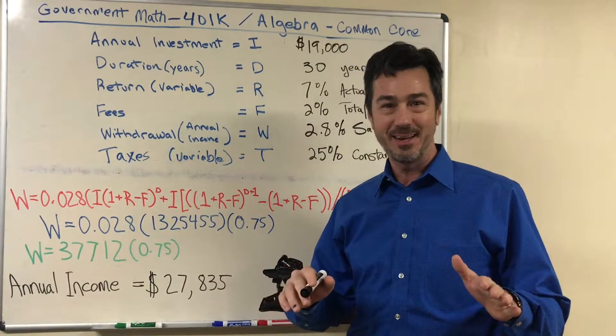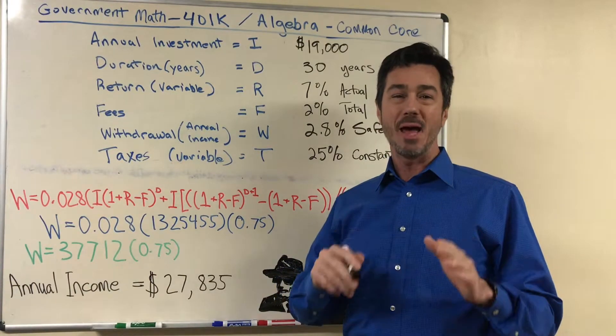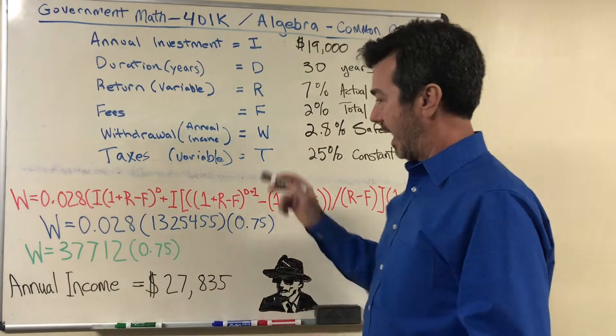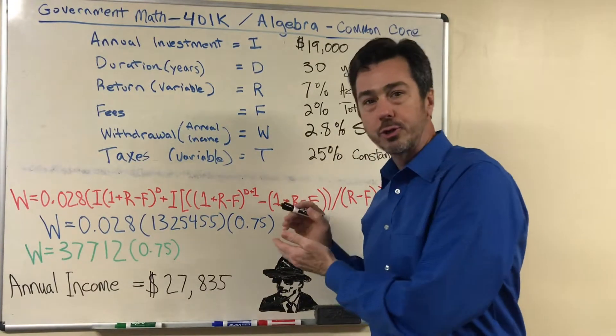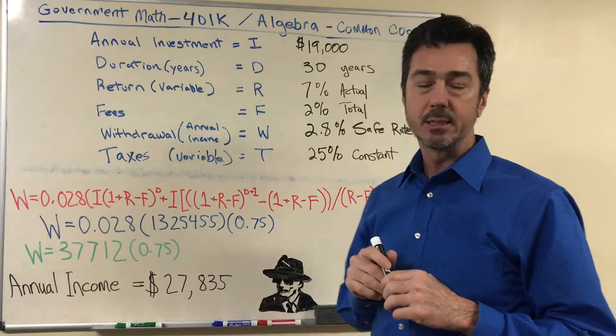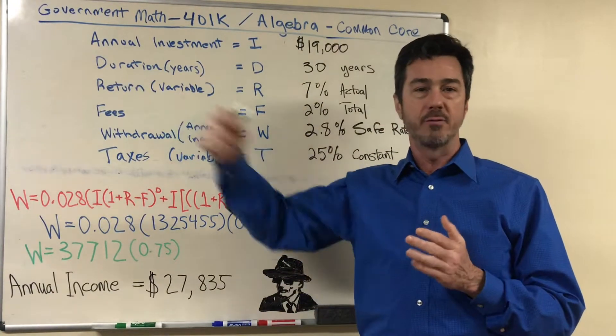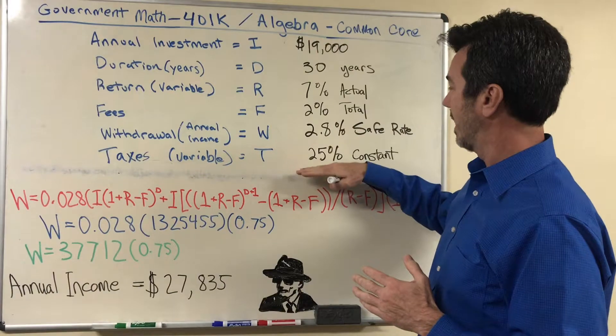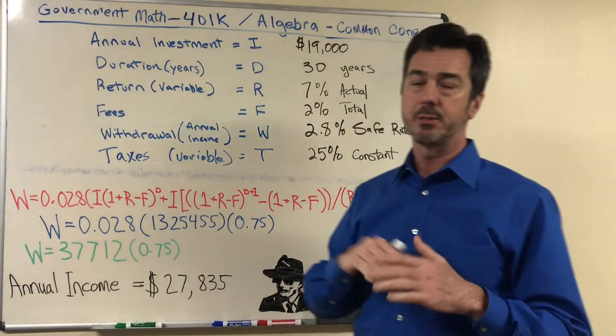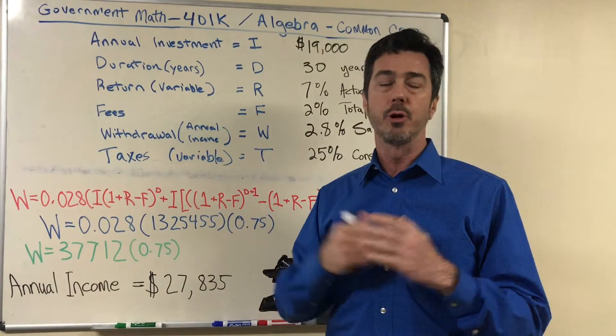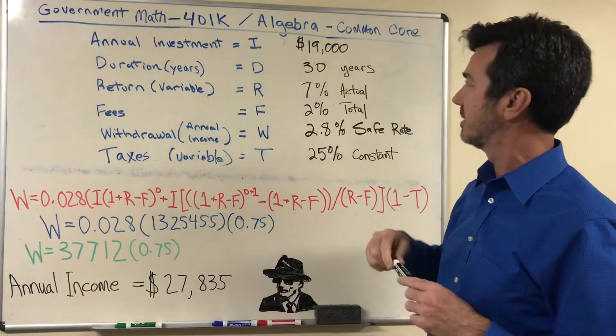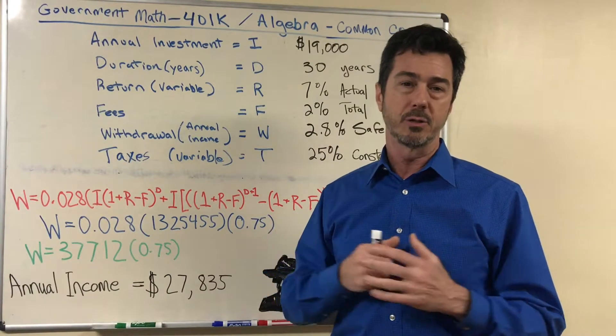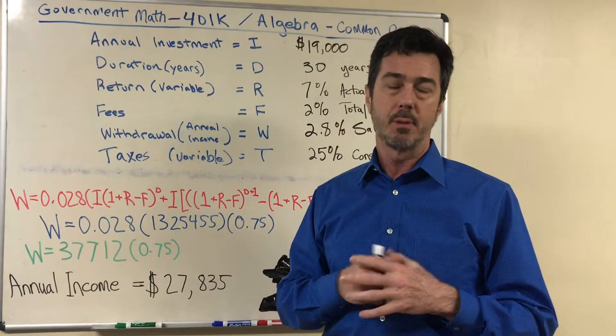Okay so did you get all of that? The point again is math is not money and money is not math. As Ethan demonstrated after taxes which again are uncertain we feel that taxes are probably on sale today and we have no way of determining what taxes will be in 30 years. So we're using what I feel is a conservative 25 percent just across the board. If somebody is saving $19,000 a year they're probably making $200,000 a year as well. So that's probably about the tax bracket today.